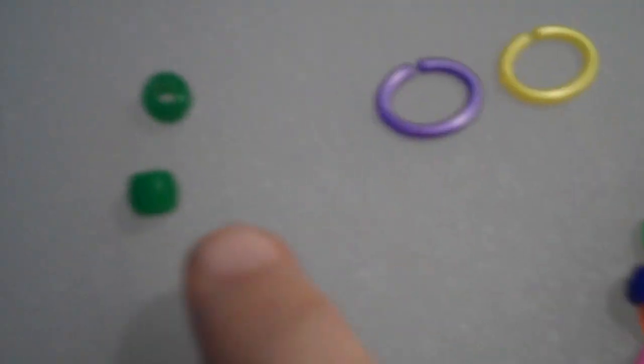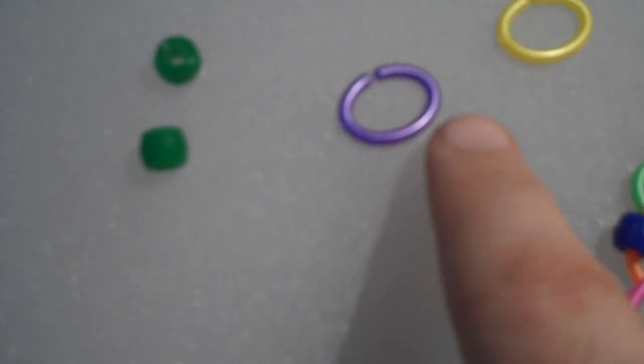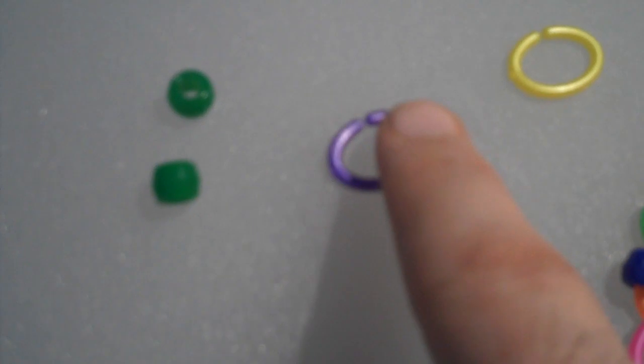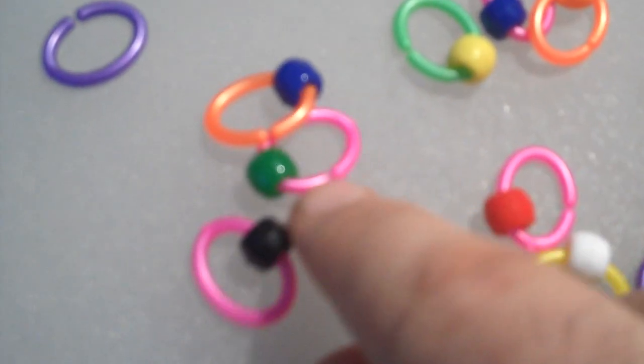Okay, so here you go. We start out with some pony beads and these little links. You can get these at the fabric store - we get them at Joann Fabrics. You put the beads on.